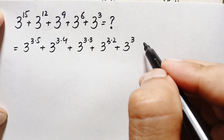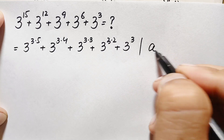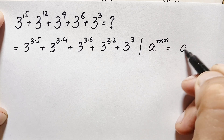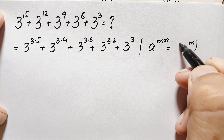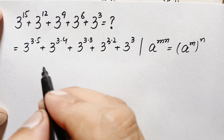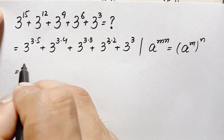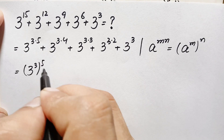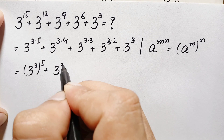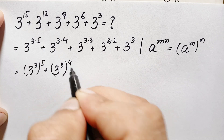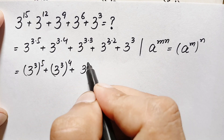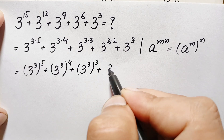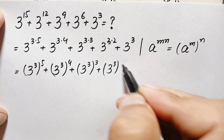For these terms we use the exponential identity: a to the power m times n equals a to the power m, raised to the power n. Using this identity, the expression becomes 3 cube raised to the power 5, plus 3 cube raised to the power 4, plus 3 cube raised to the power 3.